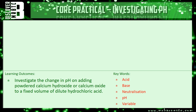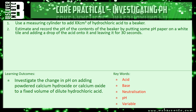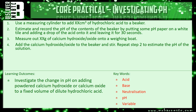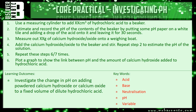Let's recap on everything we've gone through. First, use a measuring cylinder to add a certain amount of hydrochloric acid to a beaker — it doesn't matter what that volume is, as long as you keep it the same. Estimate and record the pH by putting some pH paper on the white tile, adding a drop of the acid and leaving it for 30 seconds. Then measure out a small amount of calcium hydroxide, put it onto a weighing boat, add it to the beaker, stir it, and check the pH again. Repeat this six or seven times, keep recording the pH, and then plot it onto a graph which will show you the link between pH and the amount of calcium hydroxide added to the hydrochloric acid.